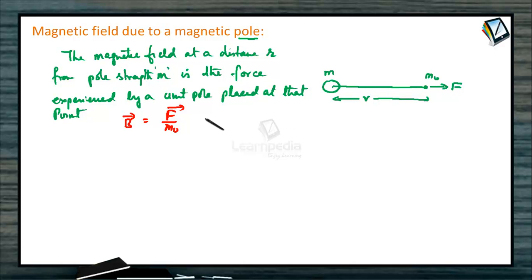What is the force between M and M0? This will be μ₀/4π × M×M0/R² divided by M0. So the magnetic field B equals μ₀/4π × M/R².